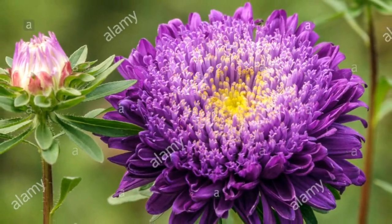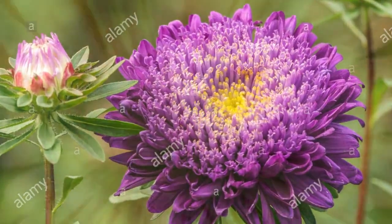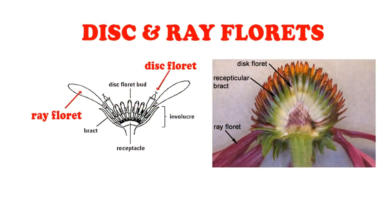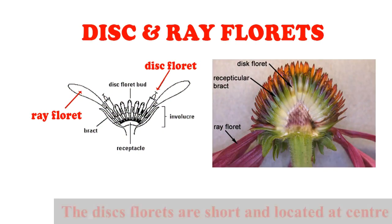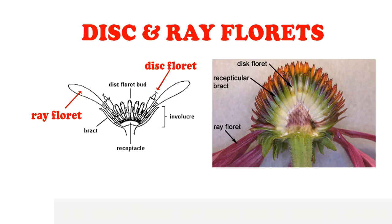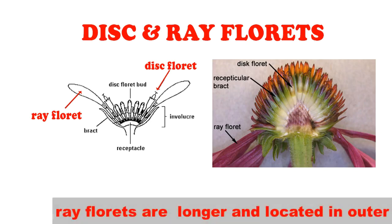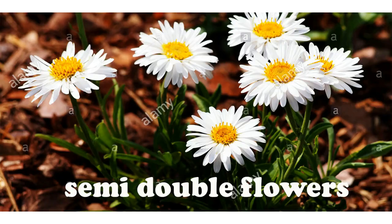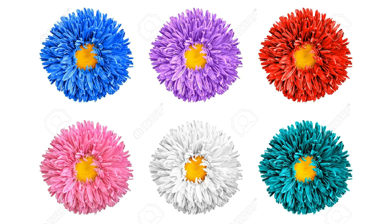The flowers of China Aster are solitary. The blooms of this plant contain two kinds of florets: disc florets and ray florets. Disc florets are shorter and located at the center of the flower. Ray florets are longer and located in the outer whorl of the flower. Flowers may be double or semi-double. They have a star-like flower head. Their colors vary from white to creamy yellow, pink, blue, red and purple.